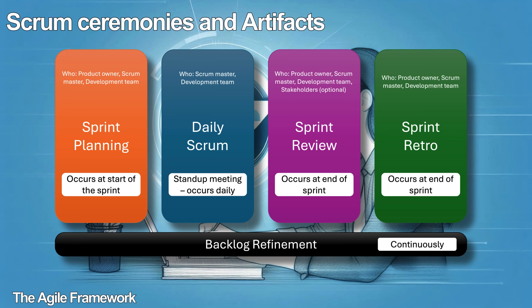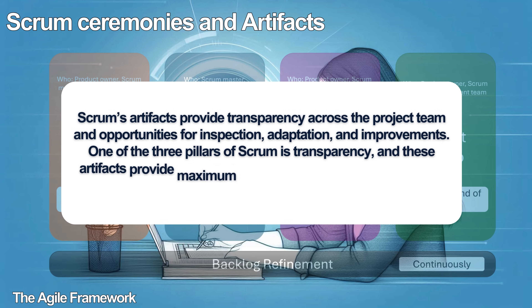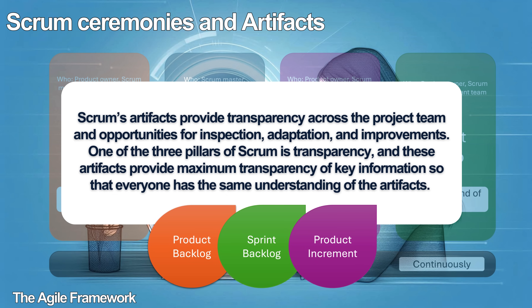What is a Scrum ceremony? Mandatory meetings in Scrum are called ceremonies. There are four mandatory meetings that should happen at specified times: the sprint planning, the daily Scrum (also known as the stand-up meeting), the sprint review or iteration review, and the sprint retrospective. Each ceremony can be differentiated by who is responsible, when the meeting should occur, the expected output, and the objective of the meeting. There are also other meetings such as product backlog refinement, as well as meetings scheduled as needed for issue resolution or risk assessment. Scrum's artifacts provide transparency across the project team and opportunities for inspection, adaptation, and improvements. Product backlog, sprint backlog, and increment are the three artifacts of Scrum.